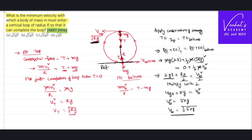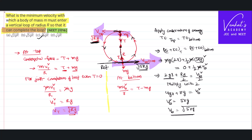So at the top the minimum required velocity is √(rg), and at the bottom the minimum required velocity is √(5rg). If you give a minimum velocity of at least √(5rg) at the bottom, the body crosses the bottom, goes up, and since it still has more than √(rg) at the top, it completes the loop. The minimum entry velocity is √(5rg) — not √(rg). √(rg) alone is not the answer. That is how the body can complete its vertical circular motion.